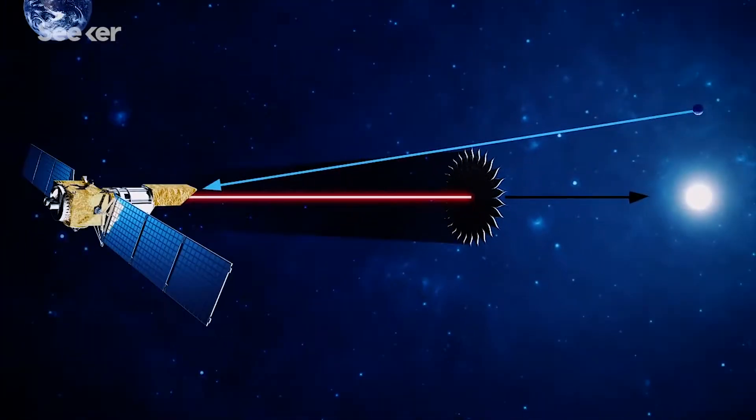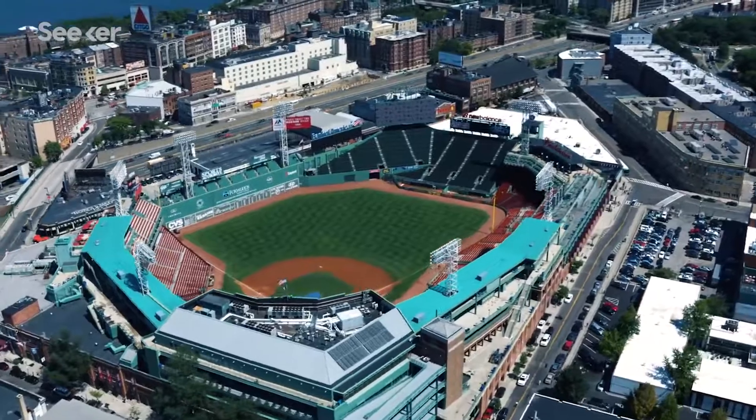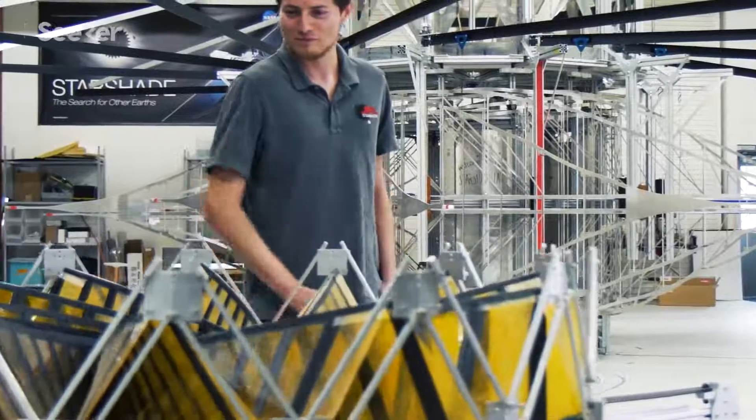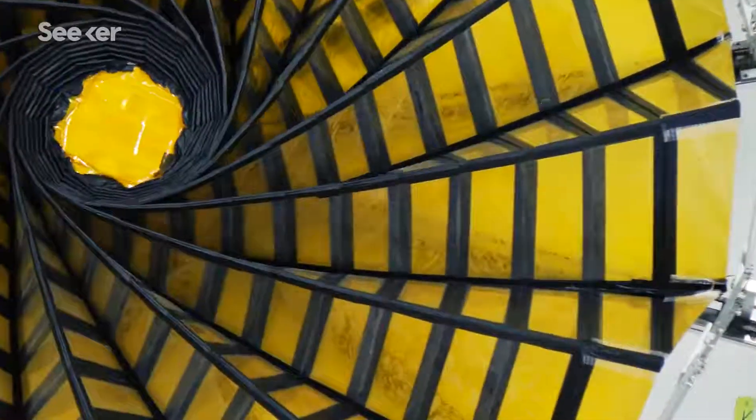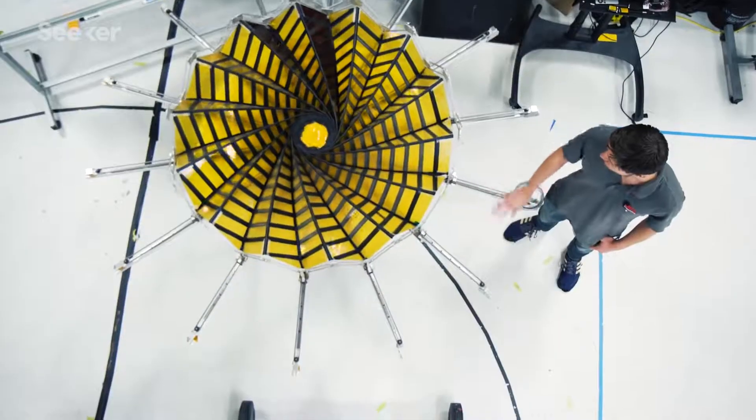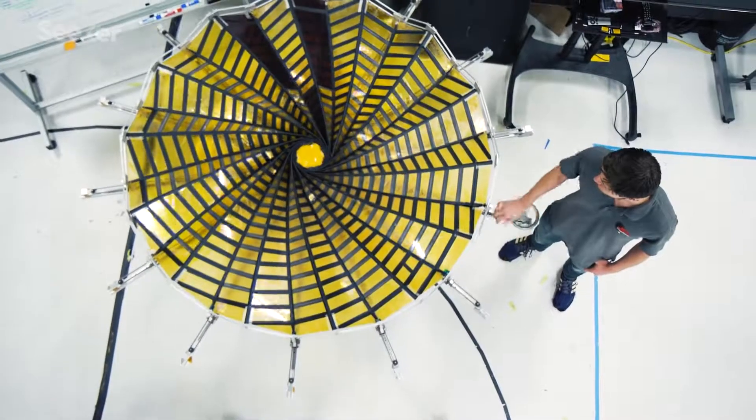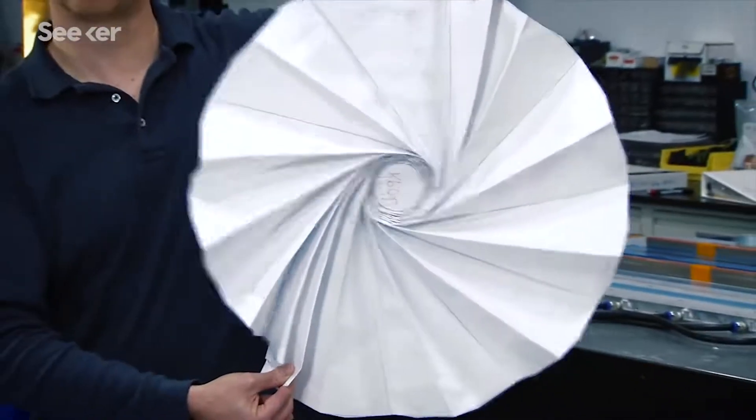Sounds easy enough, but the starshade is roughly the size of a baseball diamond. Because the starshade is so huge, we have to come up with a way of folding up this very large structure into a space so that we can launch it inside a rocket. And once it gets to space, it can unfold itself. Which is where origami comes in.